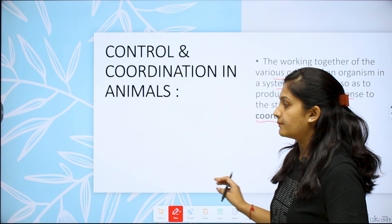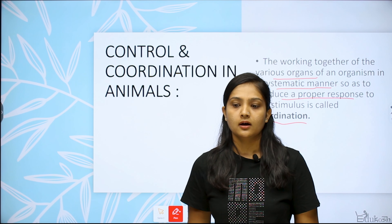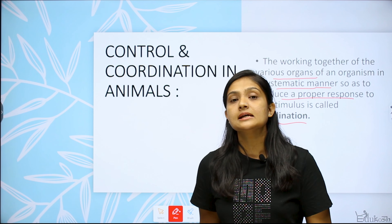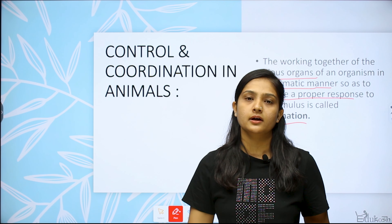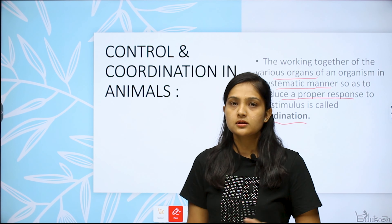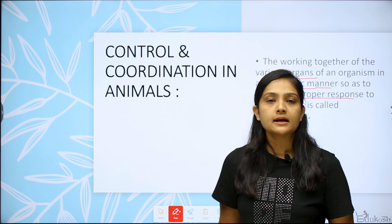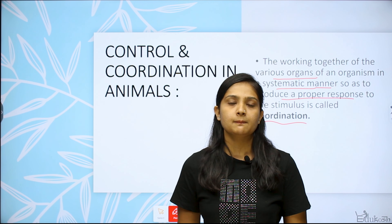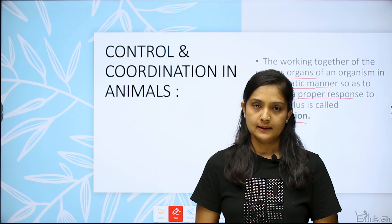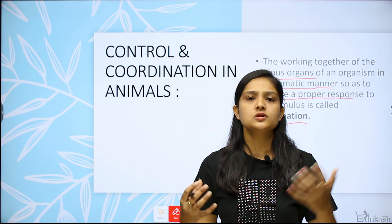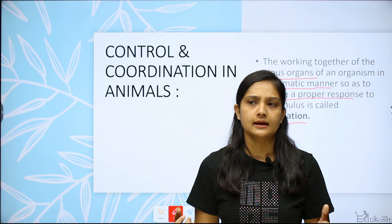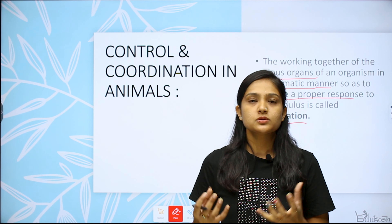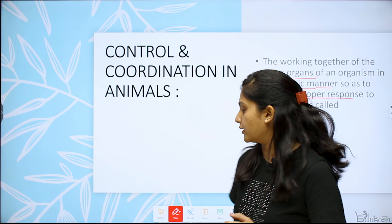First, we look at the nervous system. To receive stimuli, sense organs are present all over the animal body. Whatever light or environmental change occurs around us — how do we feel it? Through our sense organs.